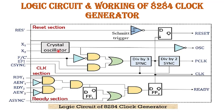The crystal oscillator in this section generates a square wave signal at its output when the crystal is attached between the two input pins X1 and X2. Here we connect an external 15 MHz crystal. The crystal oscillator produces a square wave whose frequency equals the frequency of the external crystal. This square wave output is simultaneously fed into the inverter and the input of the 2-to-1 multiplexer. The inverter produces the oscillator signal at its output, which is sometimes used as an EFI (external frequency input) signal to other 8284 clock generators in a system. Whether the crystal oscillator output or the external frequency input is given to the divide-by-3 counter is selected by the F/C input pin.